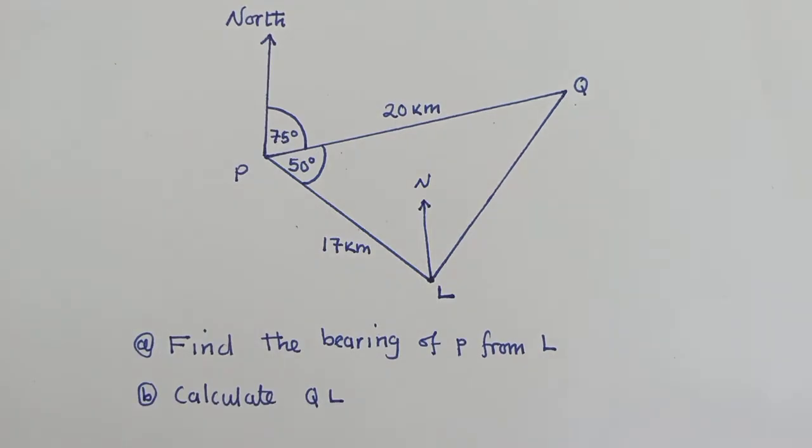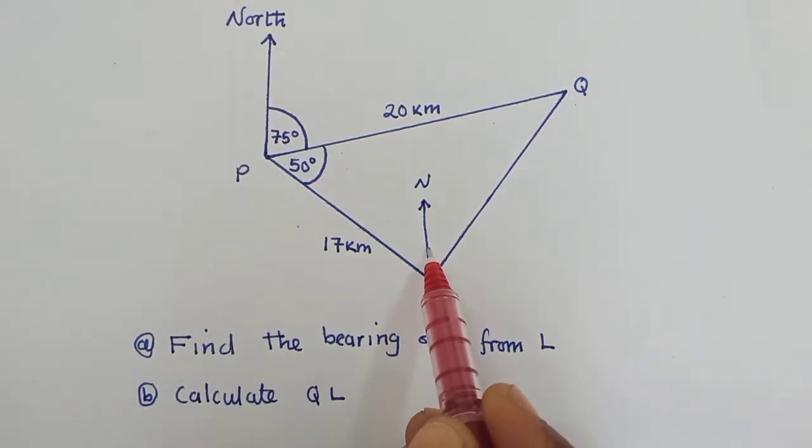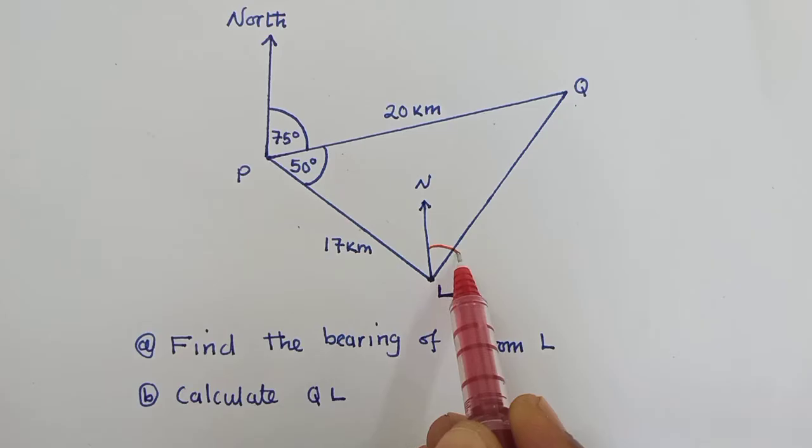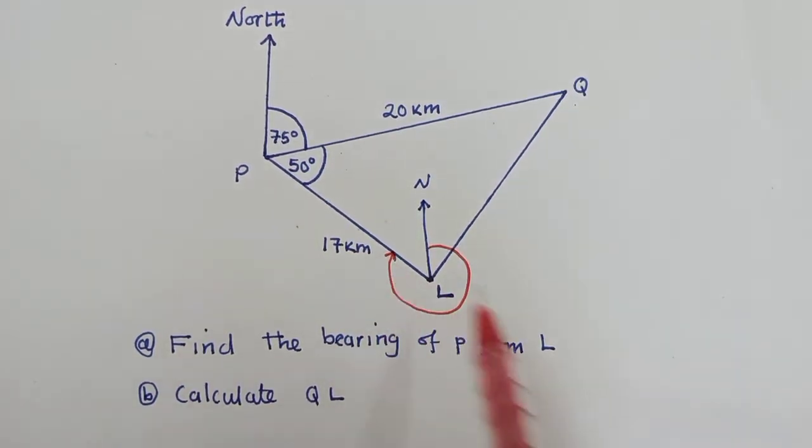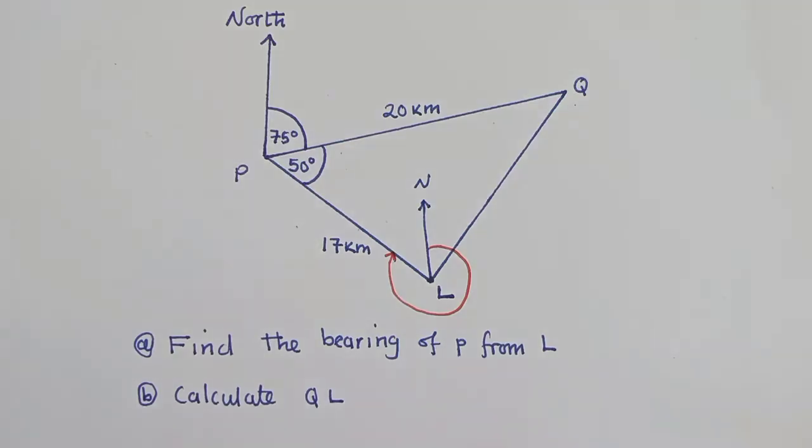Next, try to show how you're supposed to move. So you're supposed to move from the north line. You move like that up until you touch the line that is joining the two points, P and L. So now this is the bearing that we need to find.